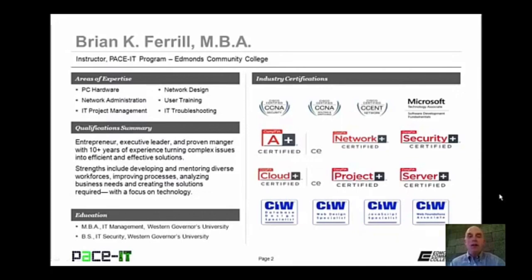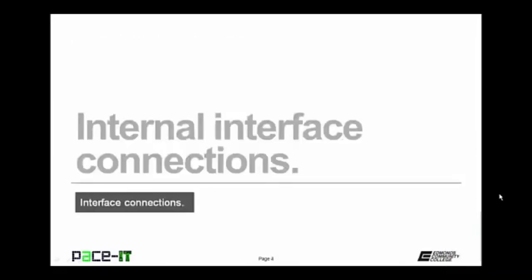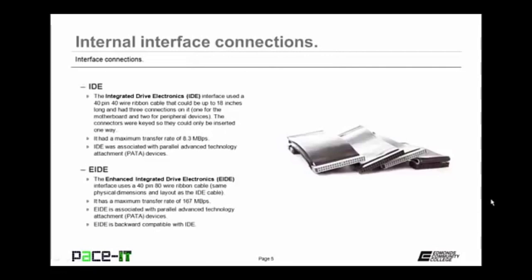Welcome to PACE IT's session on interface connections. Today we're going to talk about internal interface connections, external interface connections, and some other optional interface connections. Let's start with internal interface connections. An interface is a connection point — it involves that connection point and quite often the cable that goes with it. The first internal connection is IDE, the integrated drive electronics interface. It used a 40-pin, 40-wire ribbon cable up to 18 inches long with three connections — one to the motherboard and two for peripheral devices. The connectors were keyed so they could only be inserted one way.